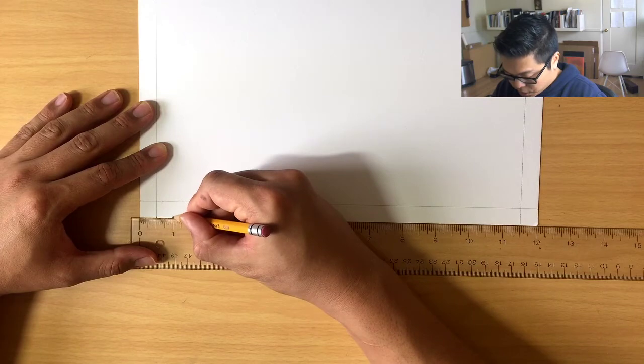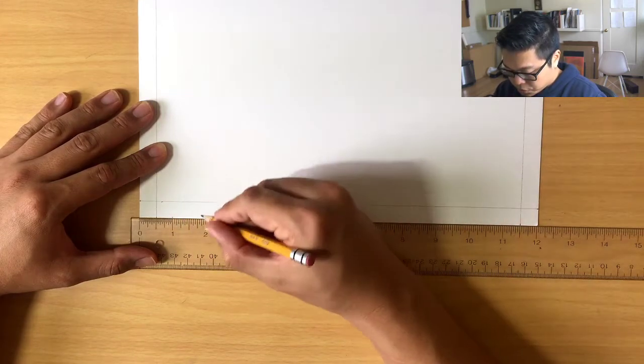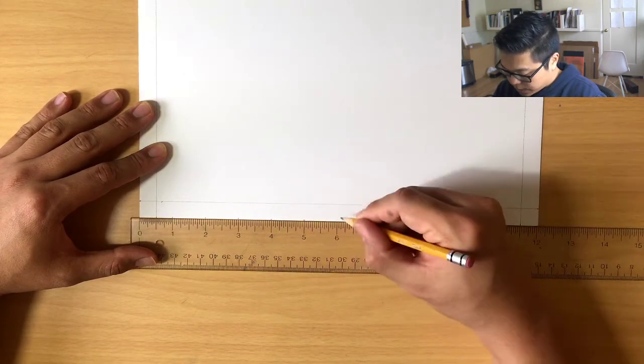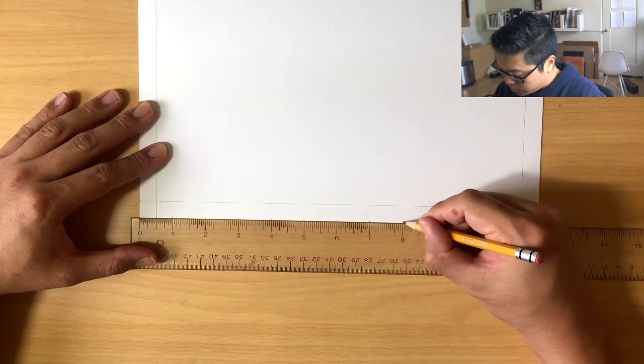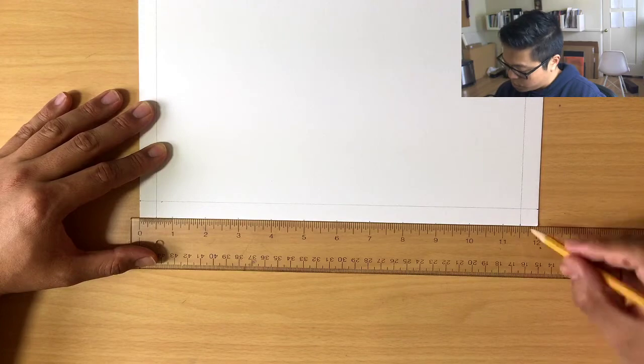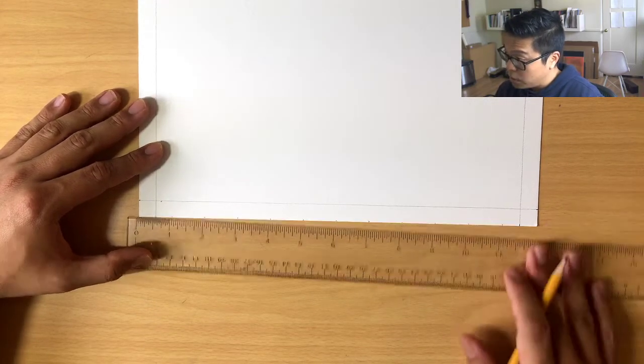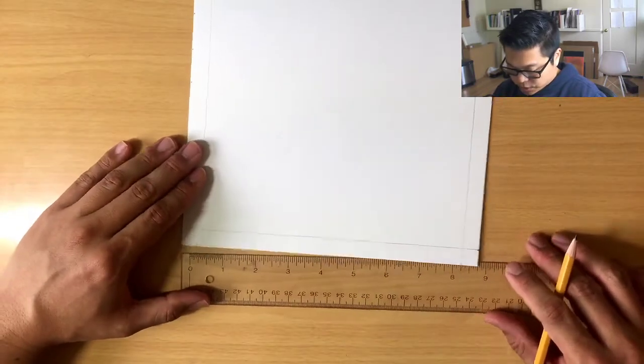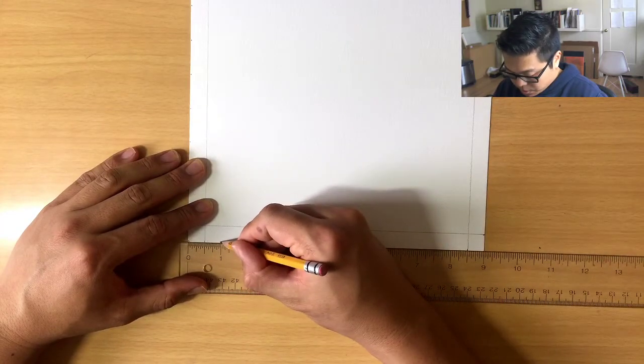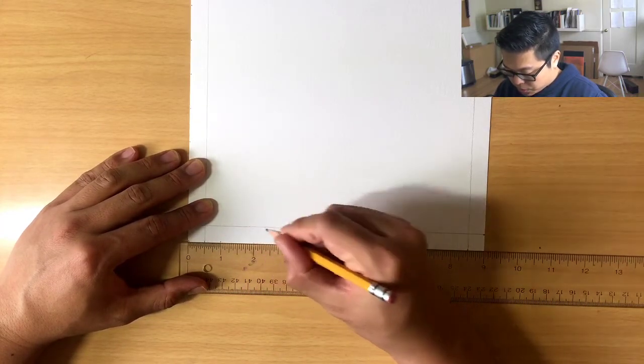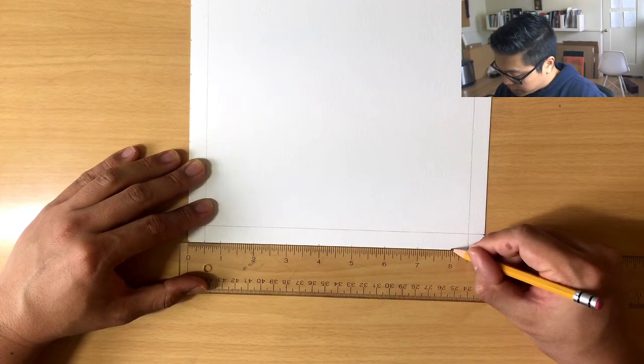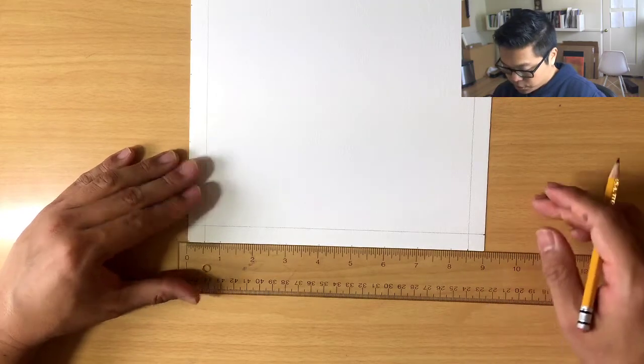So right over here at 1 inch, I'm making a dot. 2 inches, I'm making a dot. And keep going down. 3, 4, 5, 6, 7, 8, 9, 10, and 11. 12, we don't need to because that's just the edge of the paper. Remember, we are going to divide every edge up into 1-inch increments. So over here for the short side, we're going 1 inch, 2 inches, 3 inches, 4, 5, 6, 7, and 8. 9 inches at the edge of the paper. There's no mark to make there. And you're going to go around all four sides to make these divisions.